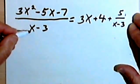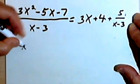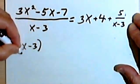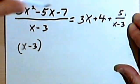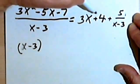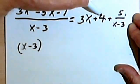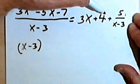We take this divisor, x minus 3, and we're going to multiply that by the whole number part, the non-fractional part of the answer.